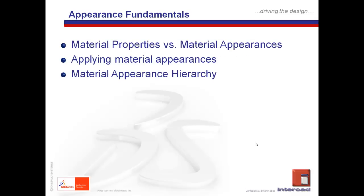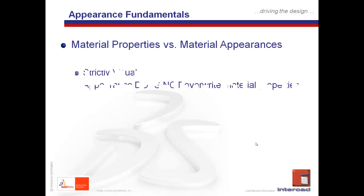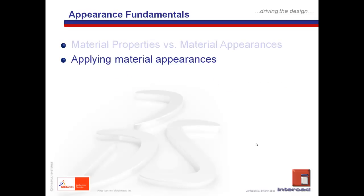Let's talk about the fundamentals. When it comes to SOLIDWORKS appearance fundamentals, there are three areas shown on screen. The first point: material properties versus material appearances. Very often we encounter the question — what happens if I change the appearances? Does it overrule the material properties already applied to a part? The answer is no. Material appearances are strictly visual; they do not change the physical properties of the component. This means we could, for example, have a transparent part with steel properties.